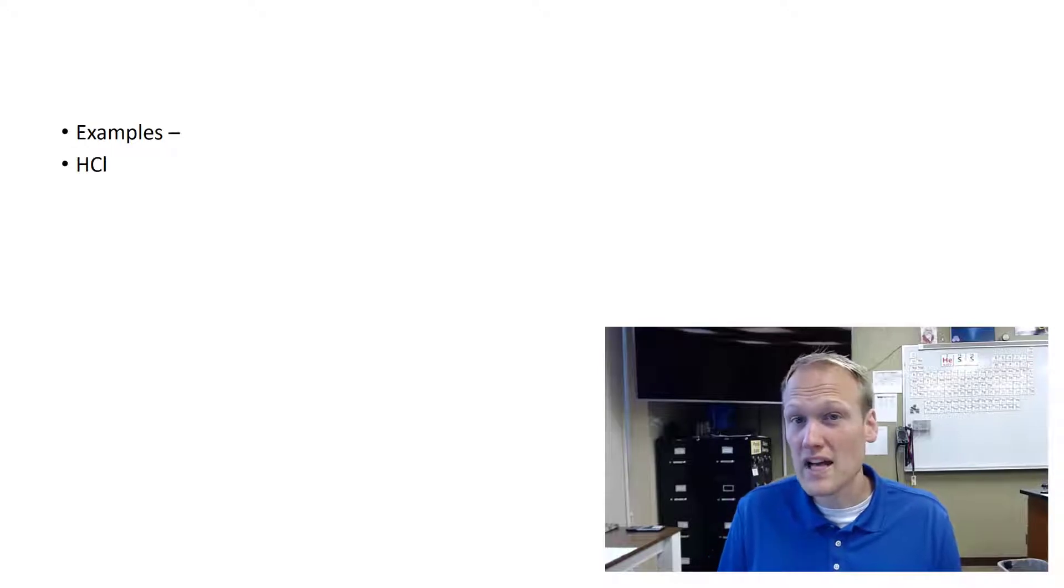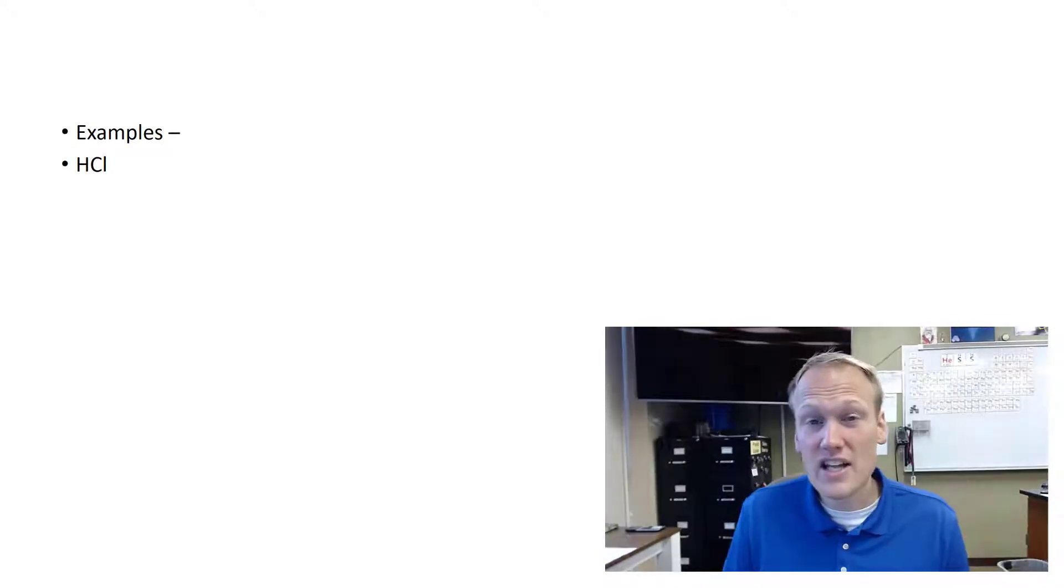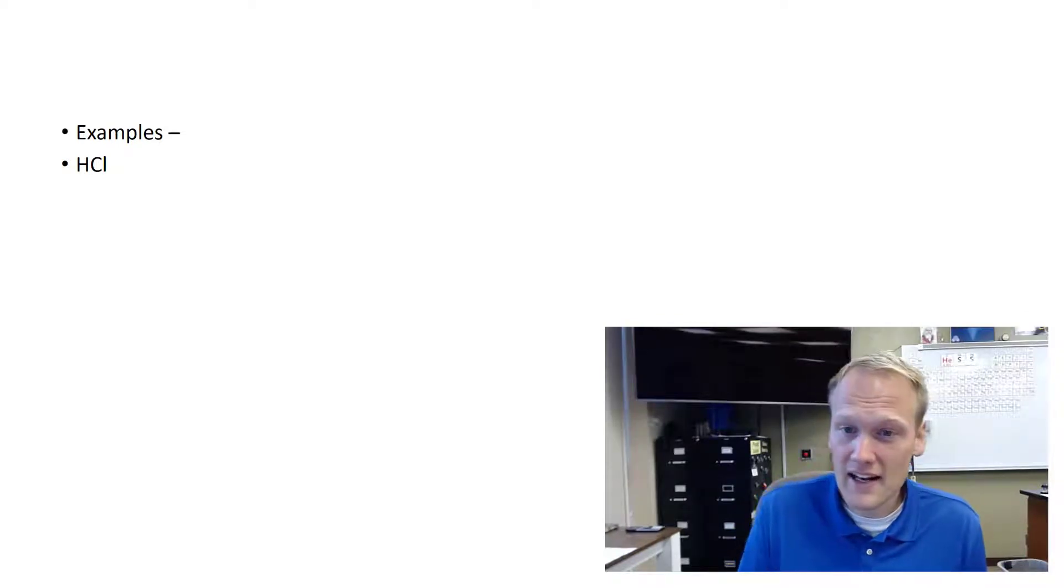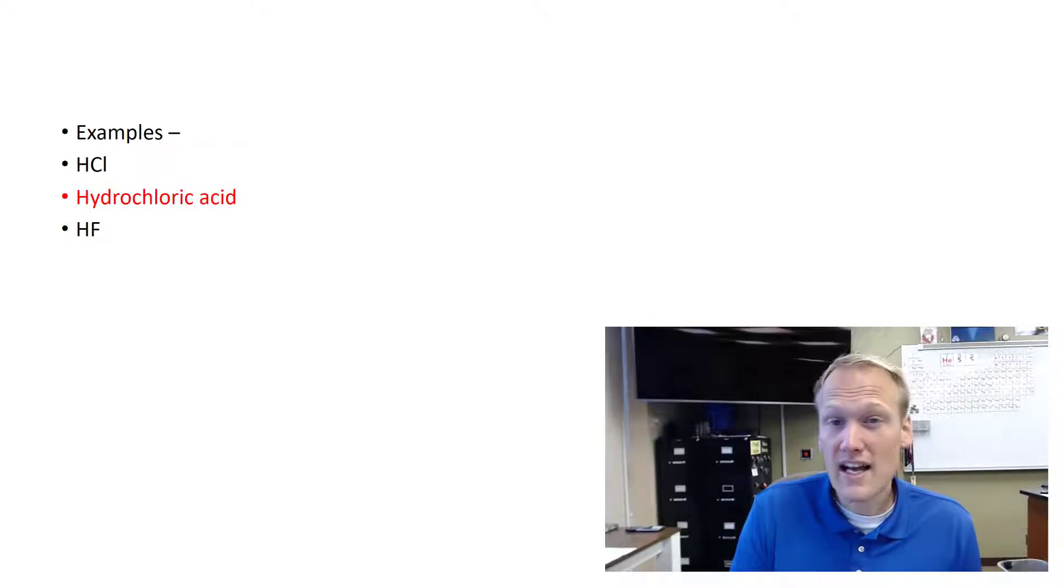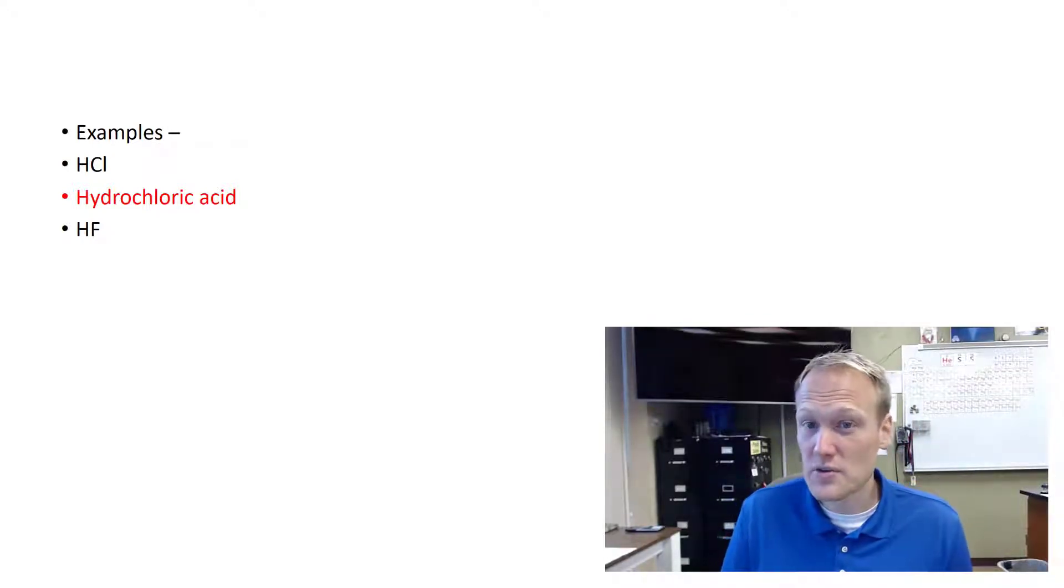You know that in lab we've used hydrochloric acid quite a bit. What does that look like? It's an H+ ion with a chlorine anion. Hydrochloric. You can see here we have an H+ ion with a fluorine anion. So this would be hydrofluoric acid.